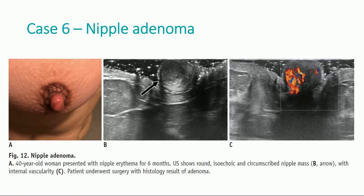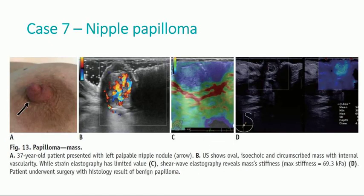Another rare nipple tumor: nipple adenoma, observed in a patient that presented with nipple erythema for six months. The ultrasound shows a round, isoechoic and circumscribed mass with internal vascularity. All of the above patients underwent surgery with histology results available. Nipple papilloma presented as a mass in a patient with a left palpable nipple nodule. The ultrasound shows an oval, isoechoic and circumscribed mass with internal vascularity. While strain elastography has limited value, shear wave elastography reveals the mass stiffness.